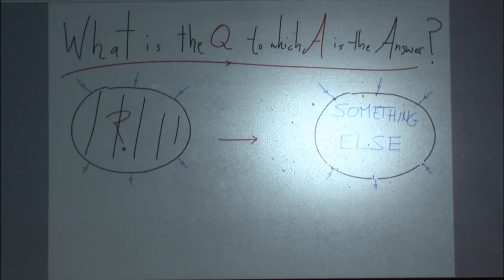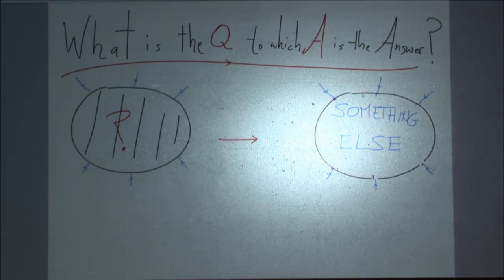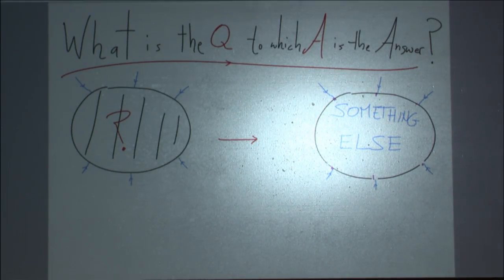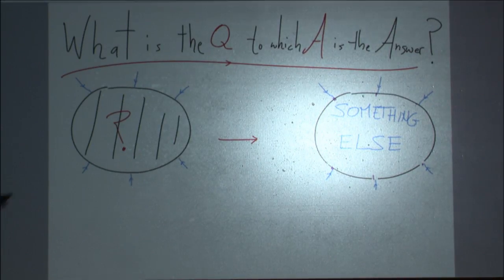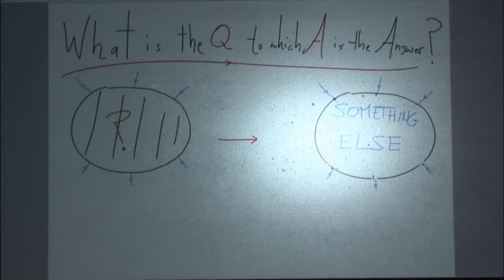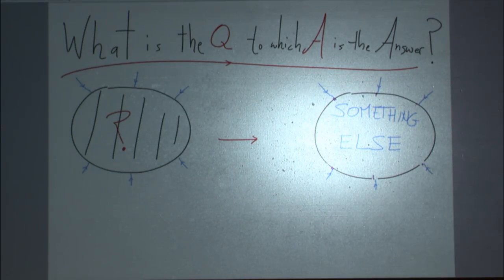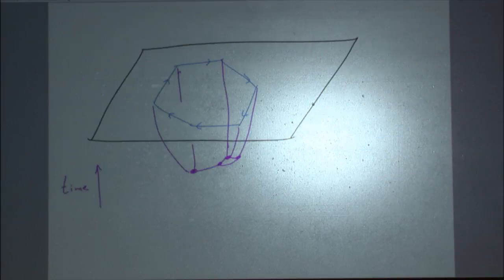But the question we've been asking is something else. Is there a different question only formulated in the space where the momenta actually live? These on-shell null momenta live on the boundary of Minkowski space, if you insist on thinking about them geometrically. In that space, what is a new question to which the scattering amplitudes are the answer? If we can understand what those new questions are, we should be able to understand how space-time locality and quantum mechanical unitarity emerge from that answer.